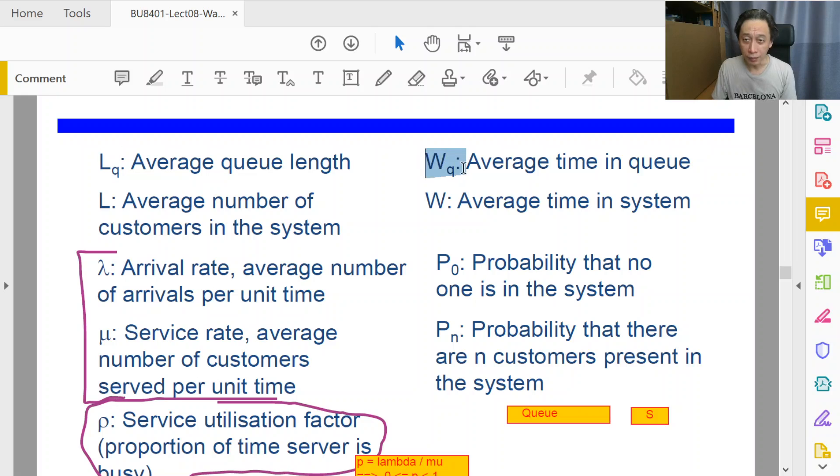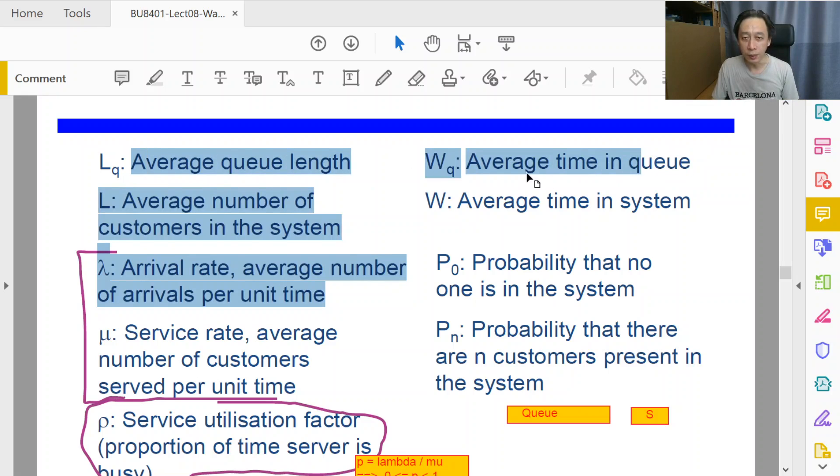Average time in the queue, the count average queue length and average number of customers in the system, and then the timing, the average time in the queue, average time in the system. Now think about the queue portion of the queue system, this part.